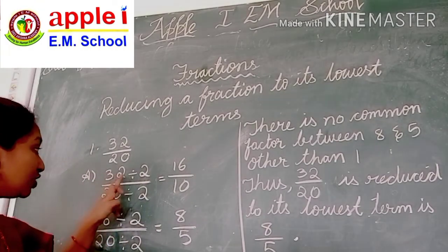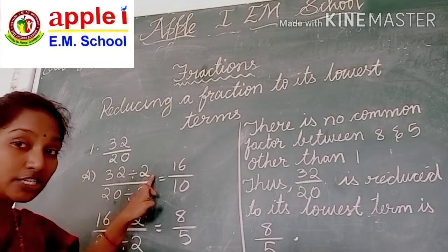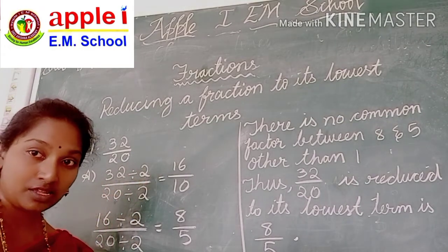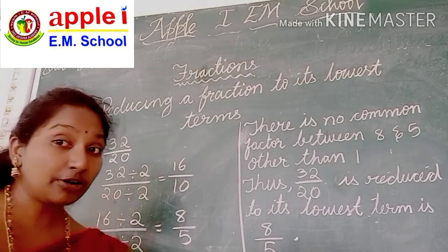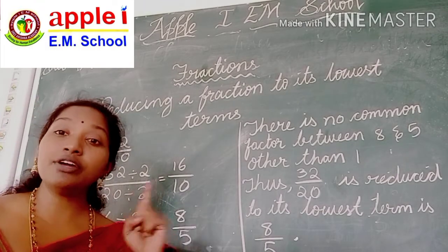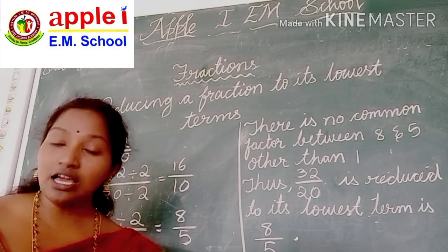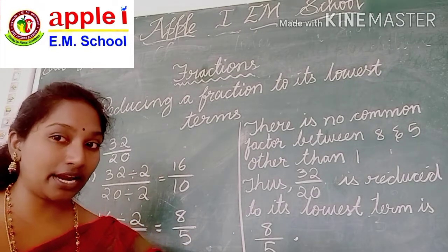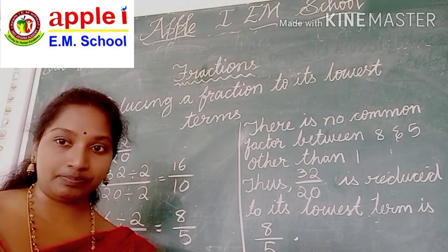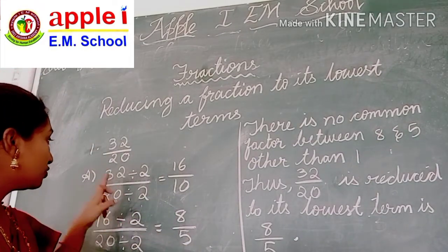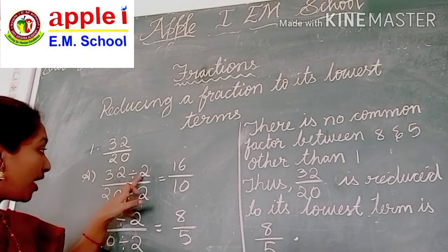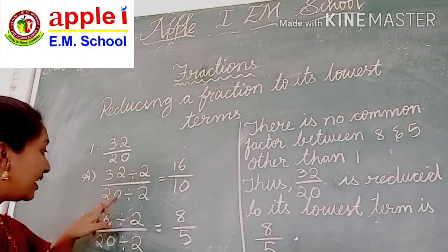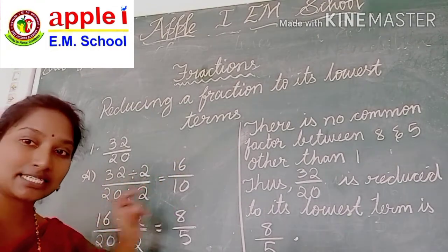See here: 32 divided by 2, by 20 divided by 2. You have to remember one thing — whenever you are dividing, you have to divide both numerator and denominator with the same number. So 32 divided by 2 is 16, and 20 divided by 2 is 10.